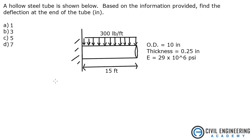The problem states a hollow steel tube is shown below. Based on the information provided, find the deflection at the end of the tube. We've got a distributed load, outside diameter is 10 inches, thickness is 0.25 inches, modulus of elasticity, 15 feet long. This thing is fixed at the end.